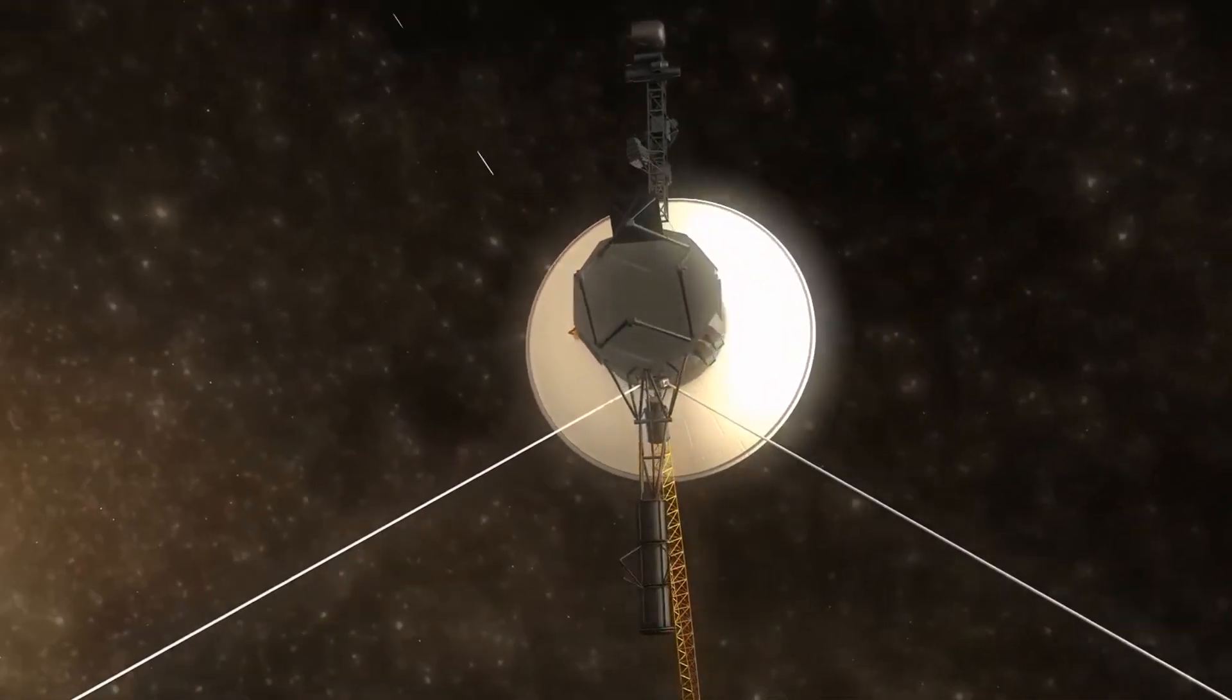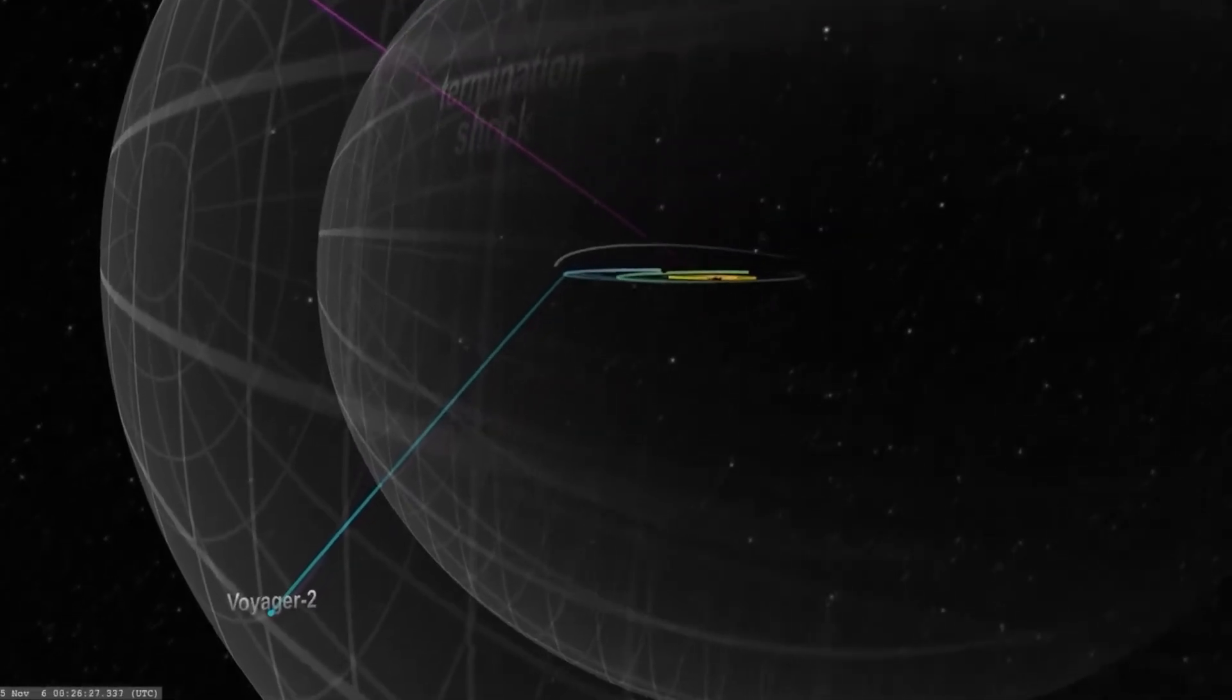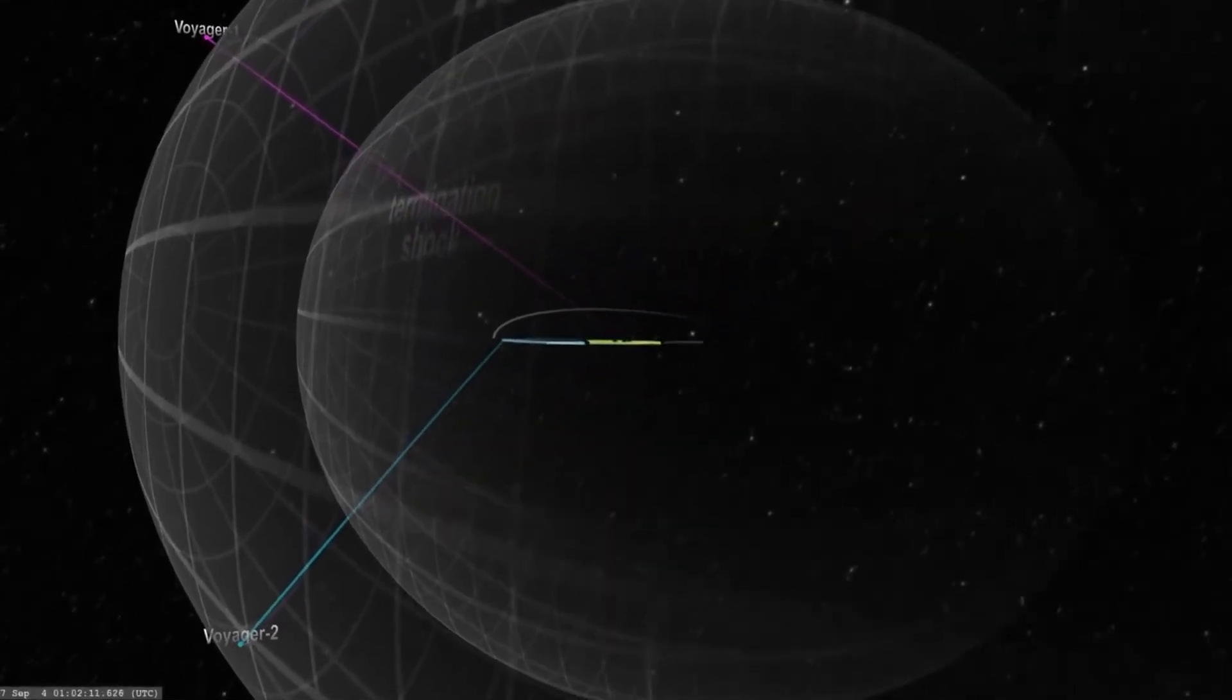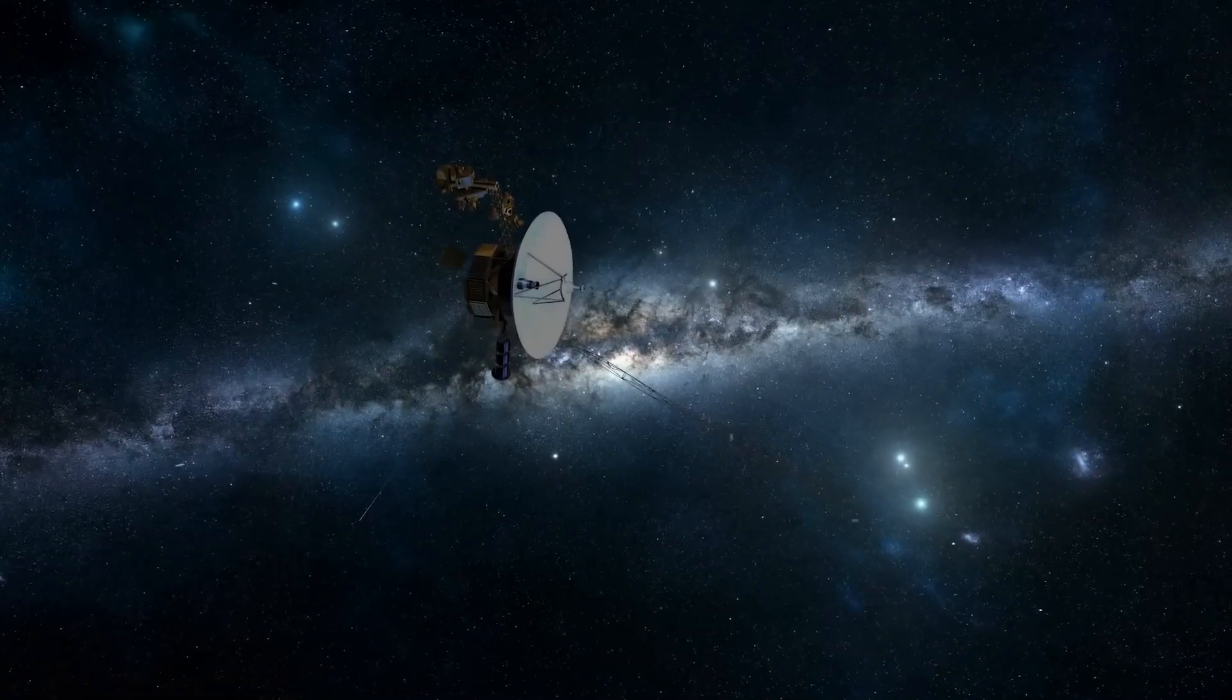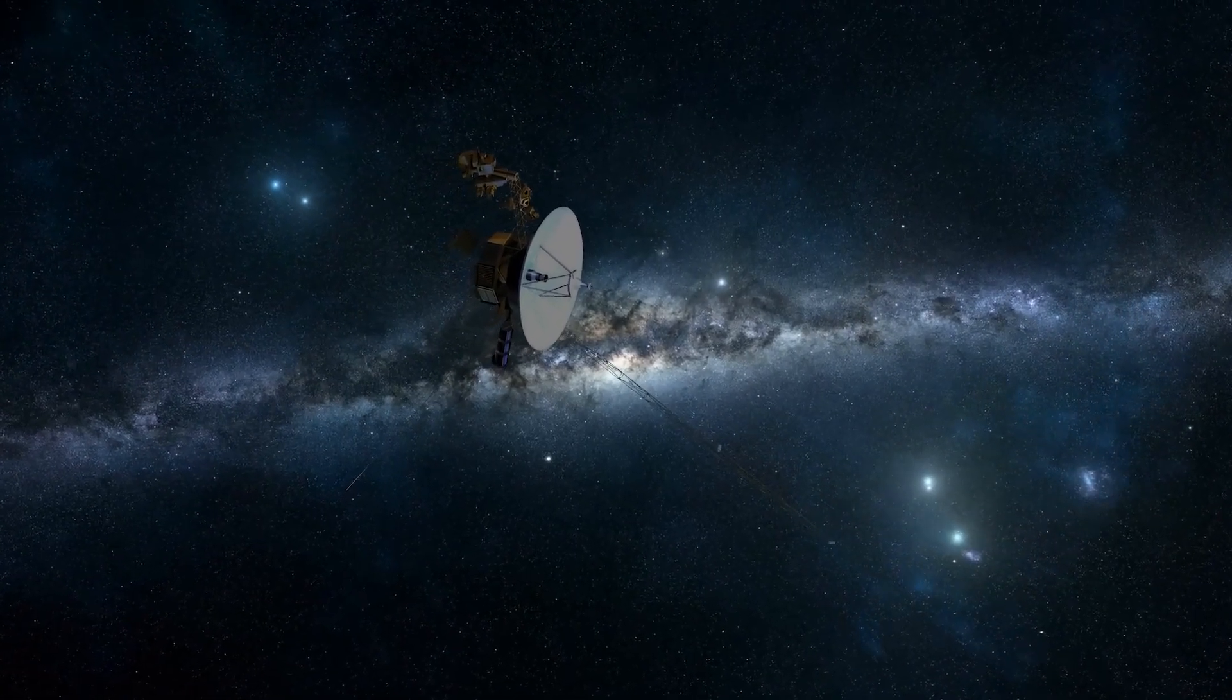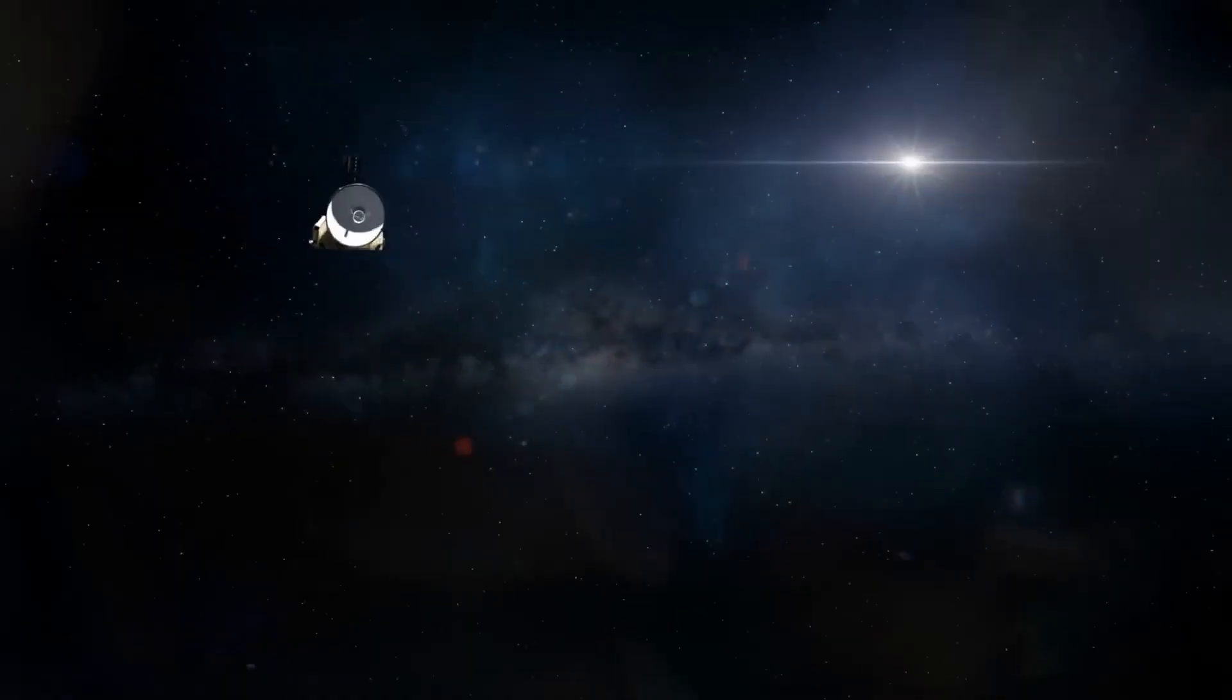It was on August 25, 2012, that Voyager 1 finally crossed the heliopause and transmitted fascinating data confirming the expected increase in plasma density, although without evidence of a change in magnetic fields. This was surprising.